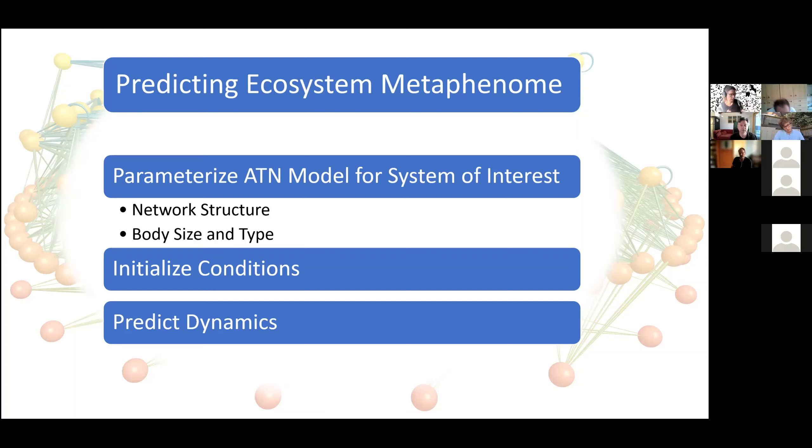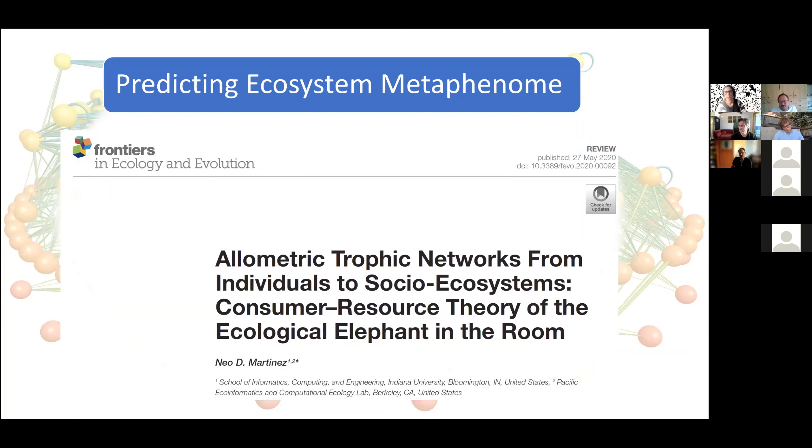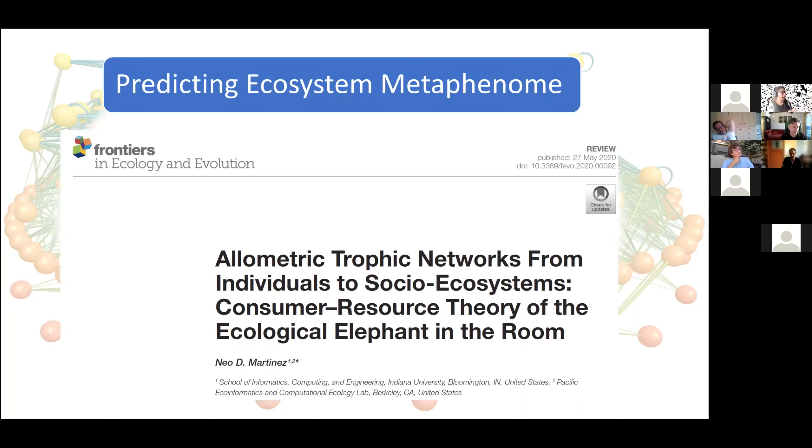We would get the network from nucleic acid sequences in the environment, use it to identify species, mine body size from literature, provide initial conditions, and predict dynamics similar to Lake Constance. I've outlined this idea in a review I wrote last year in Frontiers in Ecology and Evolution. I have a paper in review at Ecology Letters. I was hoping we could get some questions from folks.